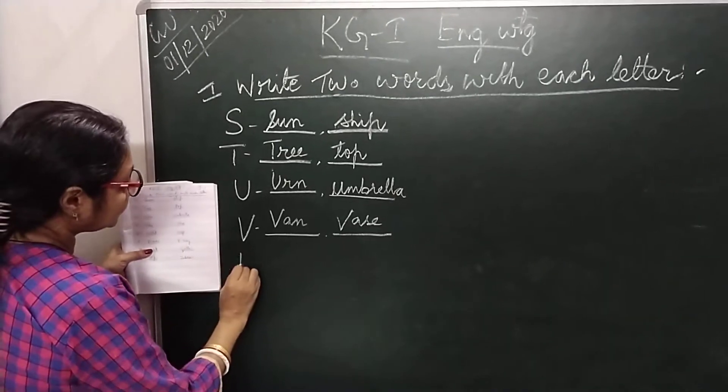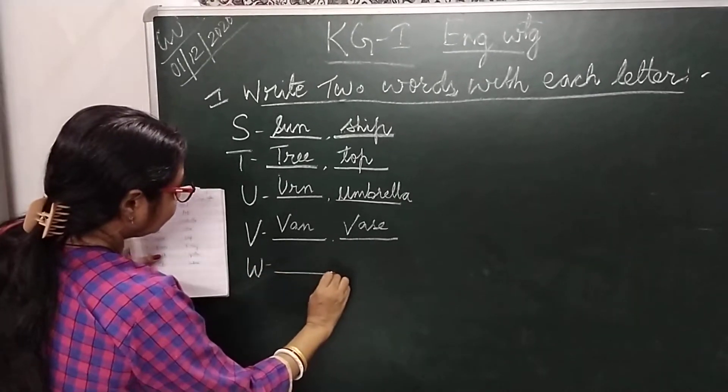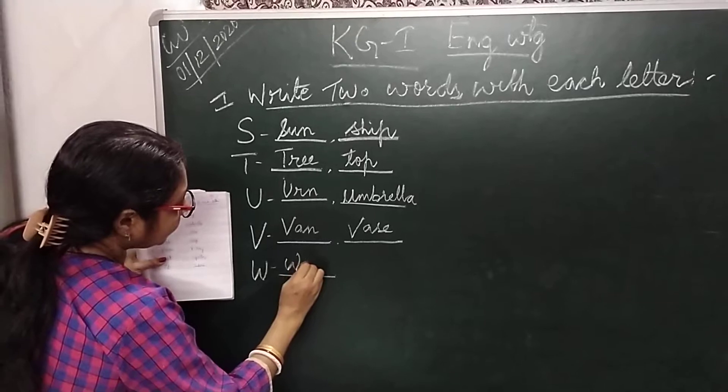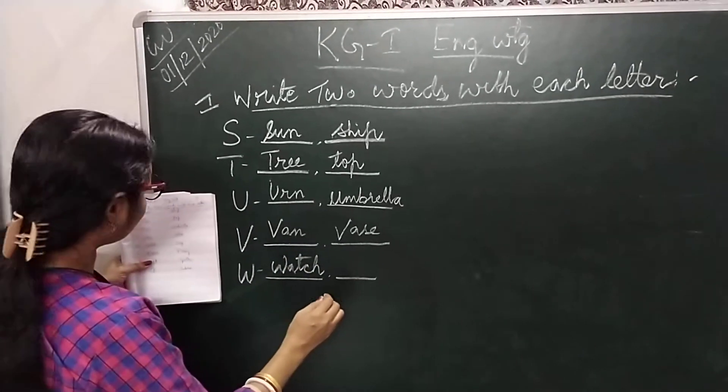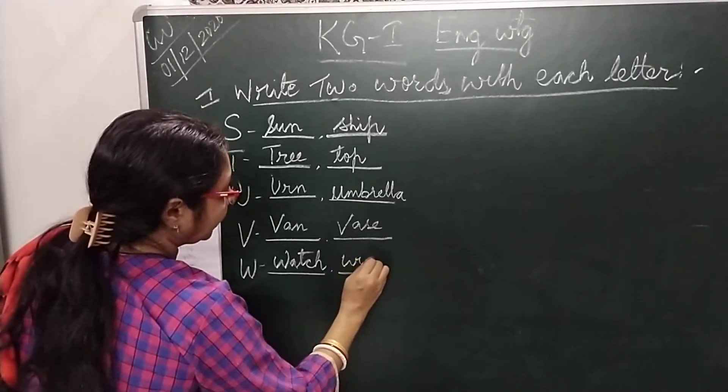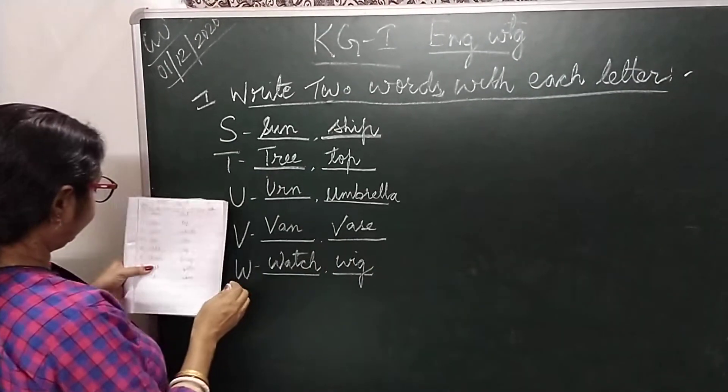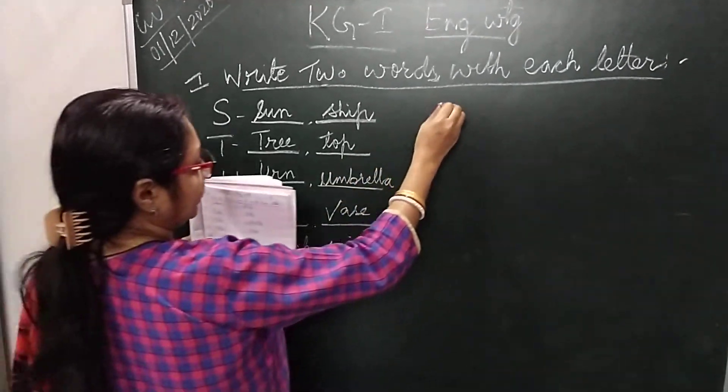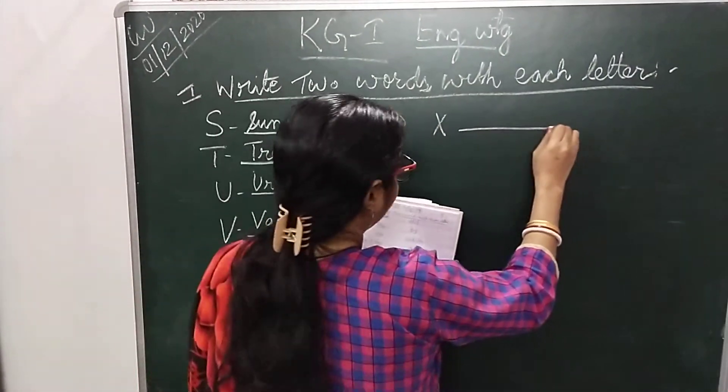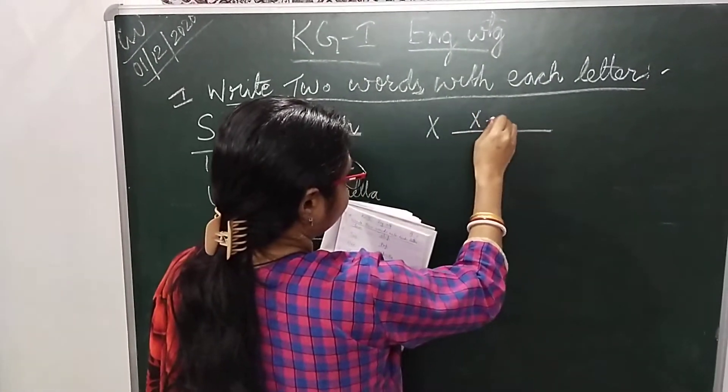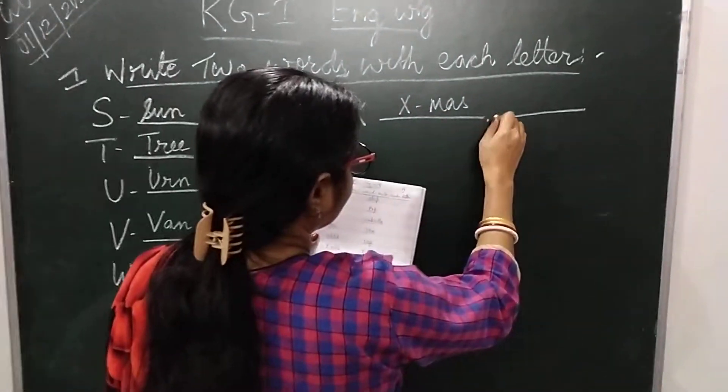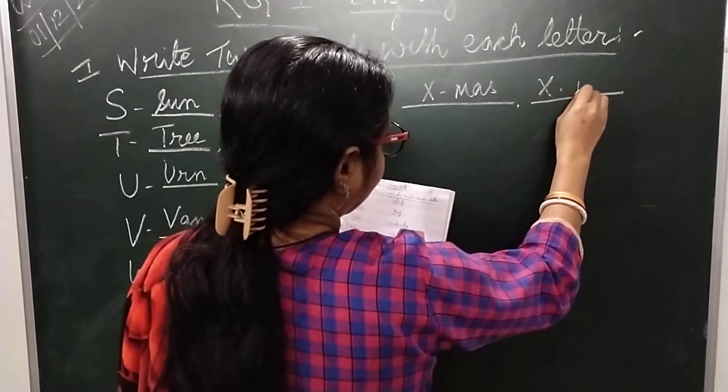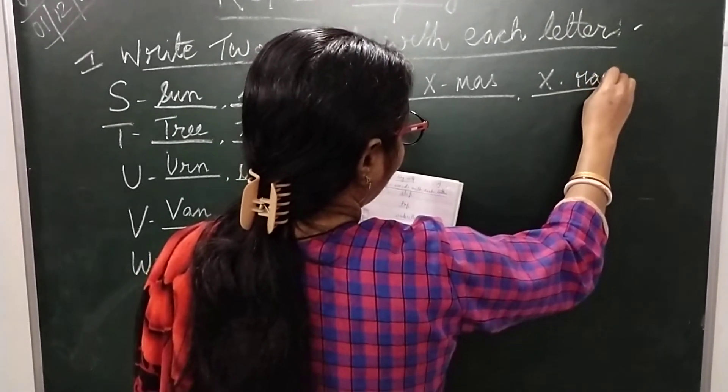Then with W, the first word is watch, W-A-T-C-H watch. The other word is wig, W-I-G wig. Then with X, the first word is X-MAS, M-A-S X-mas. The second word is X-ray, R-A-Y X-ray.